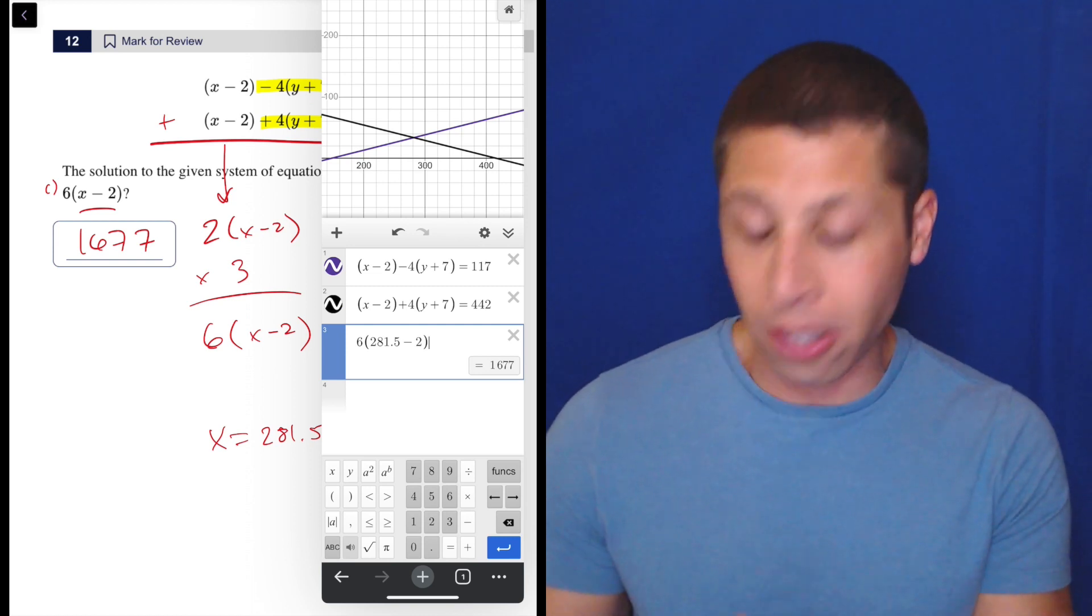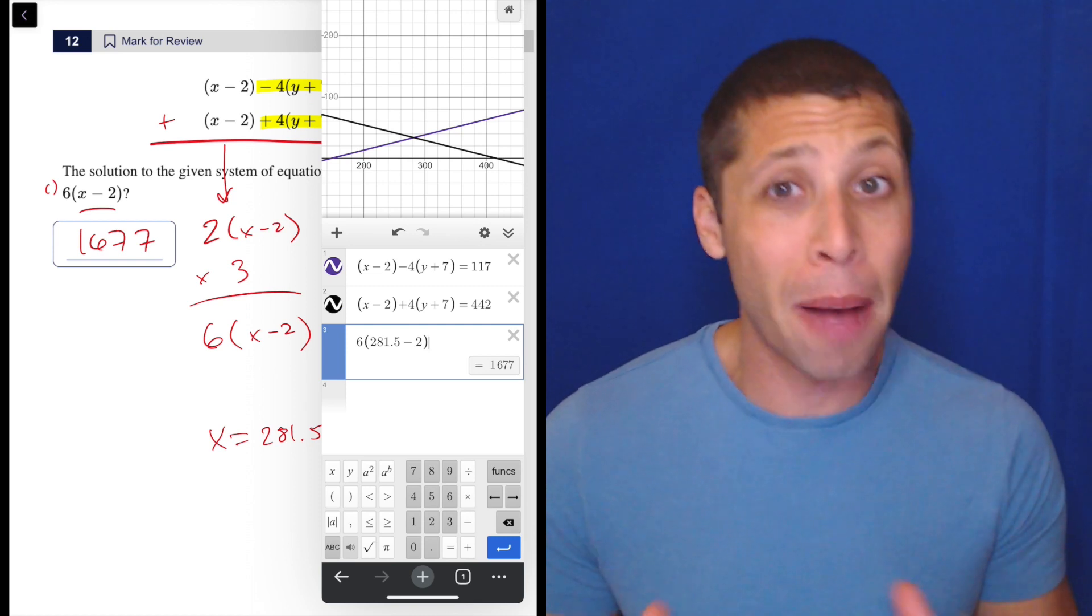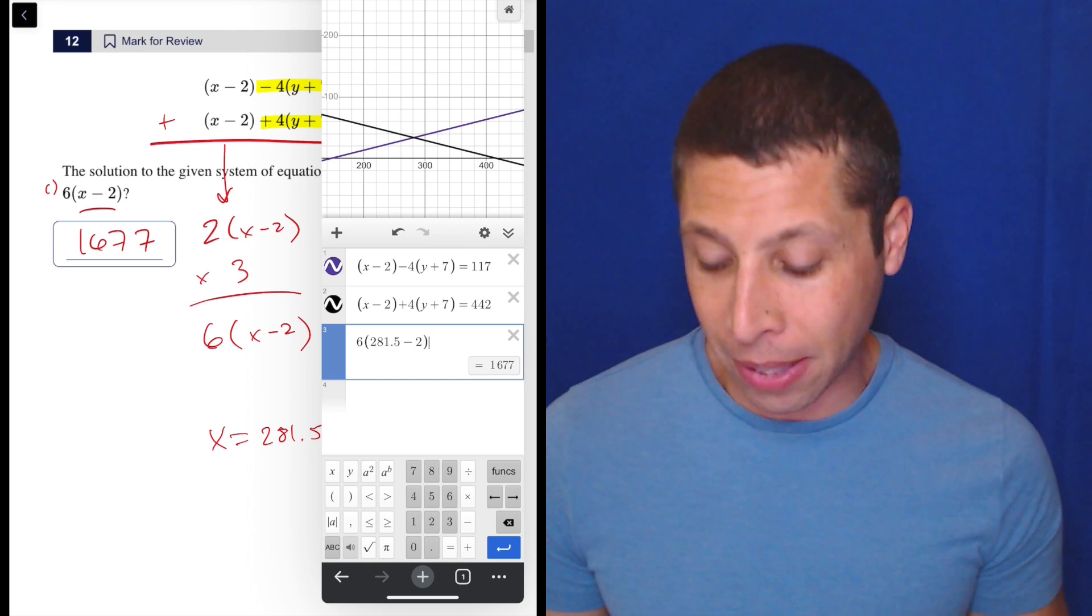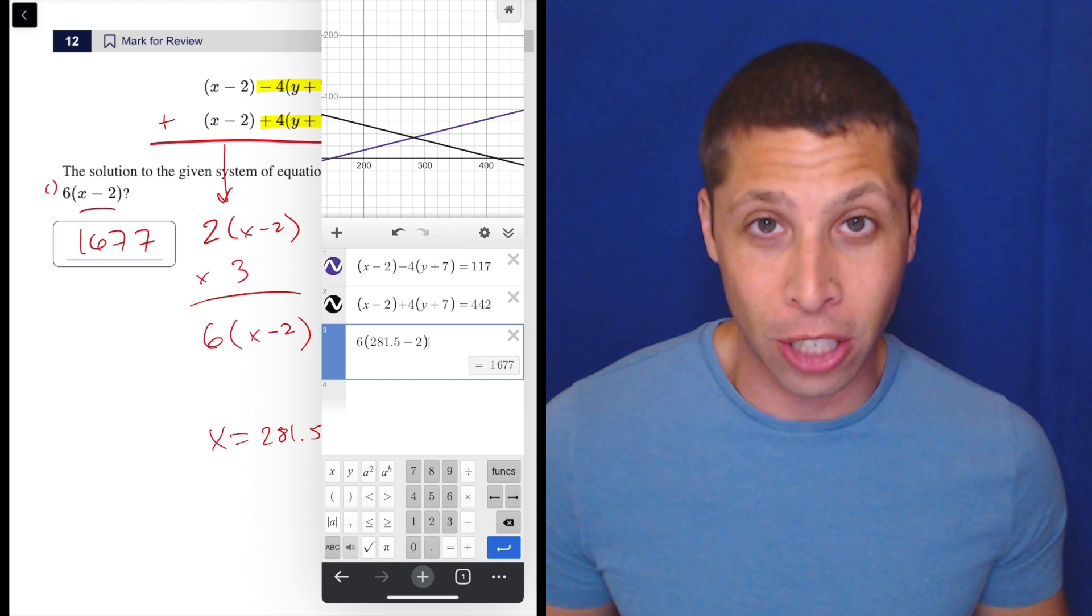The only thing you could really mess up here is forgetting that they're not asking for x or for y. They're asking for this weird 6(x - 2). But that's a very common SAT move. So we have to be prepared for that. Otherwise, you're just kind of scrolling around and typing things in. Just make sure you type them right, and you're good to go.